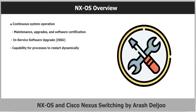The next feature is continuous system operation. This means maintenance, upgrades, and software certification can be performed without service interruptions, due to the modular nature of NXOS and features such as In-Service Software Upgrade, or ISSU, and the capability for processes to restart dynamically.